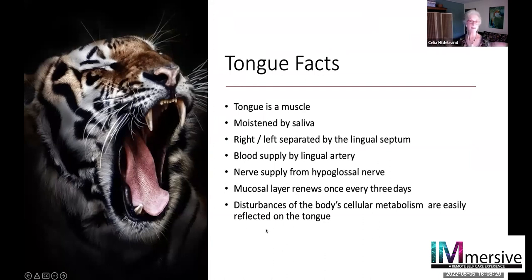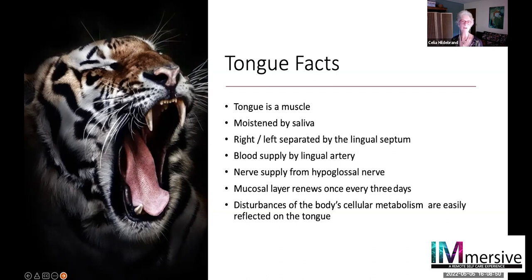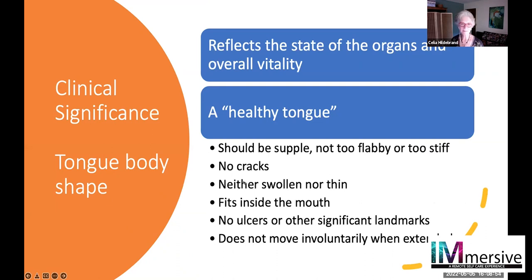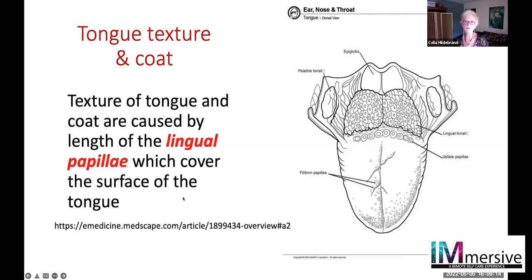The tongue is a muscle, moistened by saliva. It has a right and left side separated by the lingual septum, which you can see underneath the tongue. It has a blood supply, a nerve supply, and a mucosal layer. The condition of the tongue is often representative of what is happening inside the body. The tongue should be supple, not flabby, not stiff, not with many cracks, neither swollen nor thin. It fits inside your mouth. There are no ulcers or other significant landmarks, and it does not move involuntarily when extended. This is what your dentists and doctors look at when peering inside your mouth.